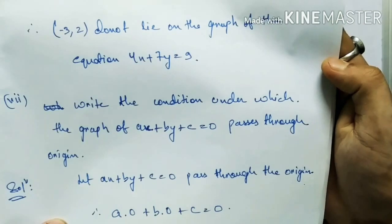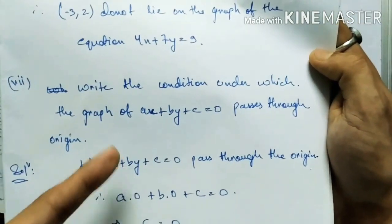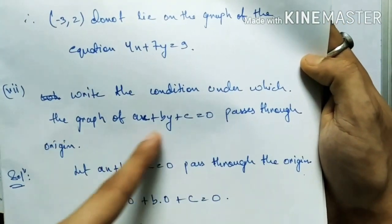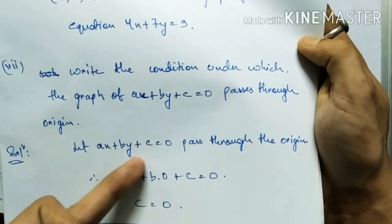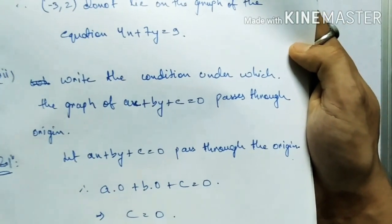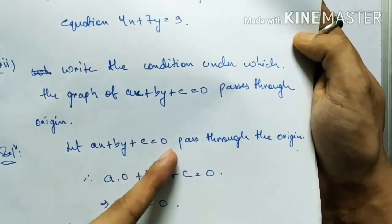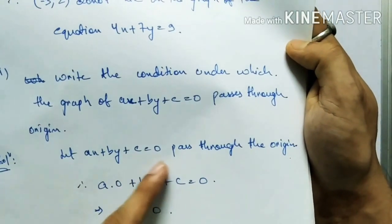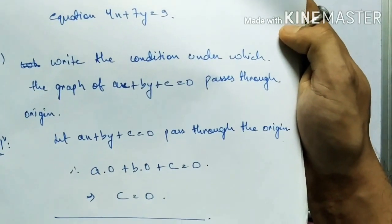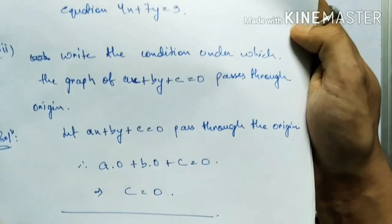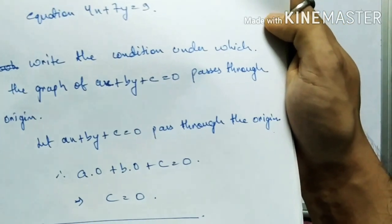Last question: write the condition under which the graph of ax plus by plus c equals 0 passes through the origin. Let ax plus by plus c equals 0 pass through the origin. Since the origin is (0, 0), substitute x=0 and y=0 into the equation. You get c equals 0. So the condition is c equals 0 — only then will the line pass through the origin.